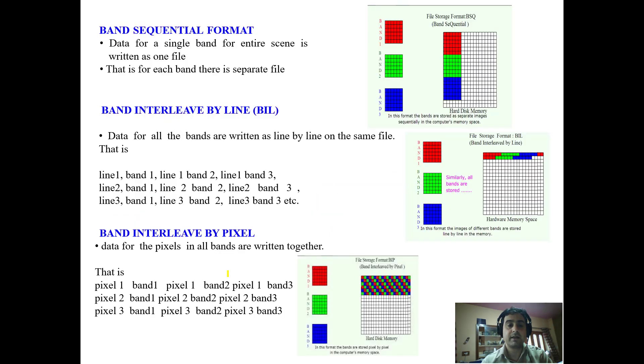Trying to know about band sequential format: the data for a single band for the entire scene is written as one file. This means each band has a separate file. Band 1 has a separate file, band 2 has a separate file, and band 3 has a separate file.